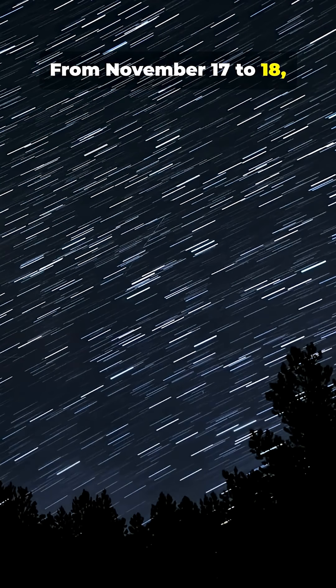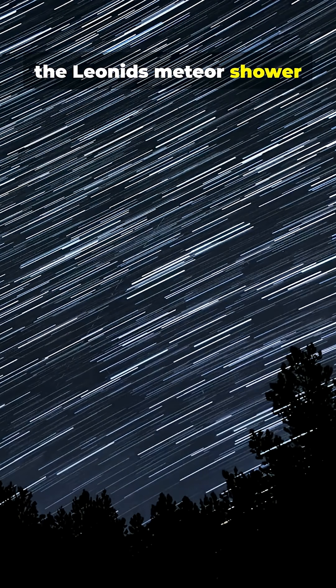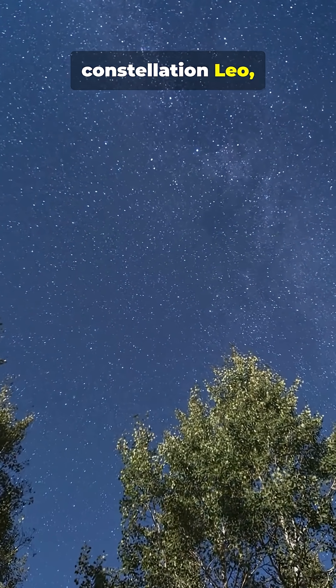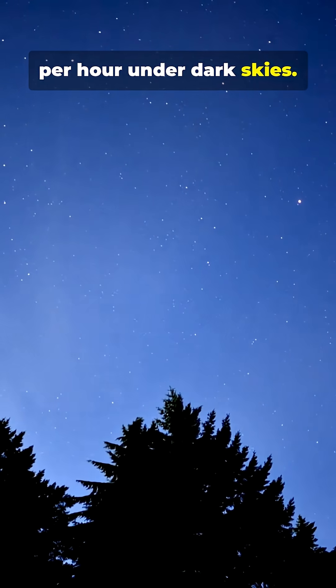From November 17 to 18, the Leonids meteor shower reaches its peak, fast-moving meteors radiating from the constellation Leo, with up to 15 meteors per hour under dark skies.